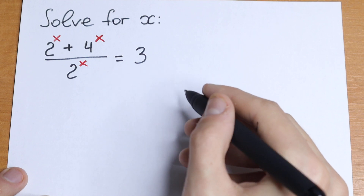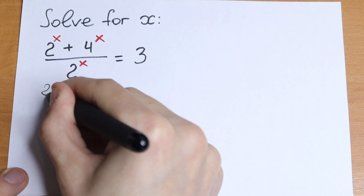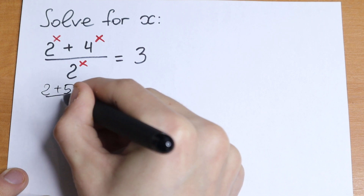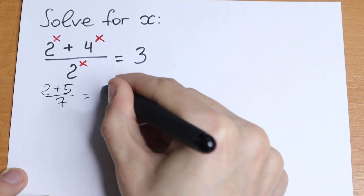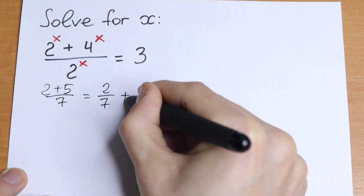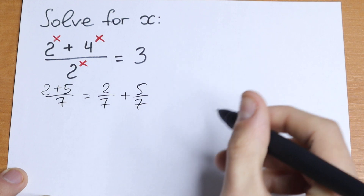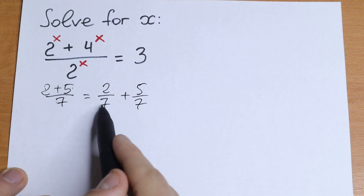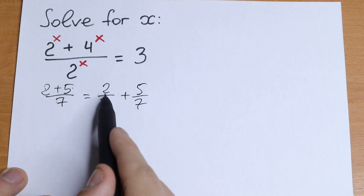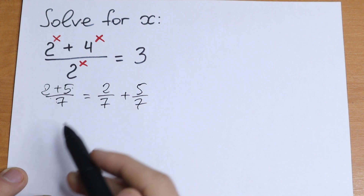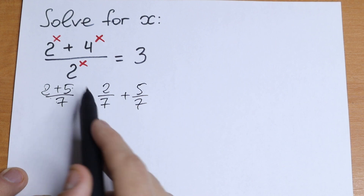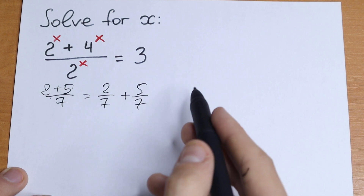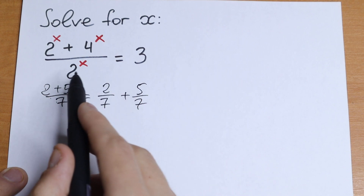First of all, I want to write a really useful property. We can write 2 plus 5 over 7 as 2 over 7 plus 5 over 7 — we can divide both elements by the common denominator. So if you have a situation like that, you can easily split the fraction into separate parts. Let's apply this here.